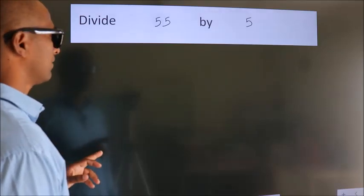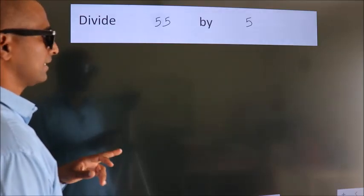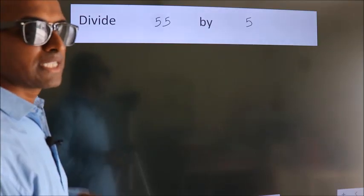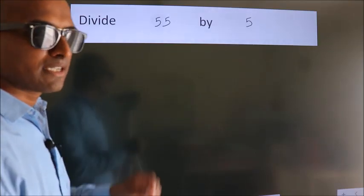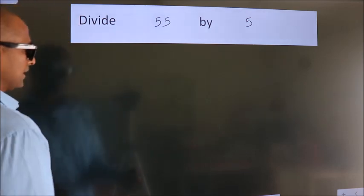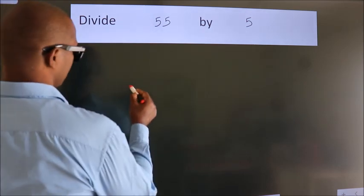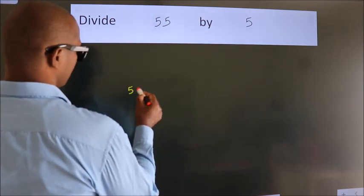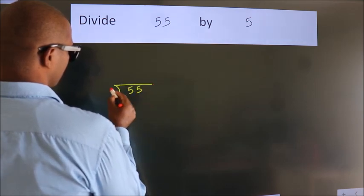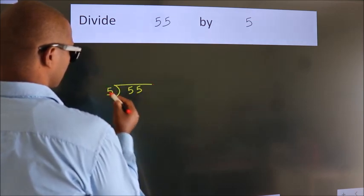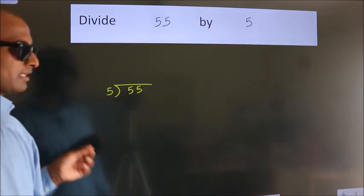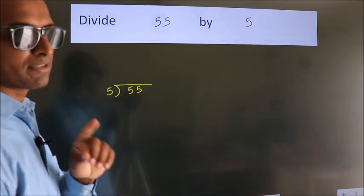Divide 55 by 5. To do this division, we should frame it in this way: 55 here, 5 here. This is your step 1.